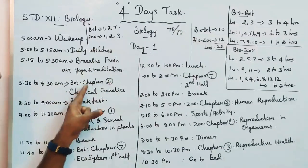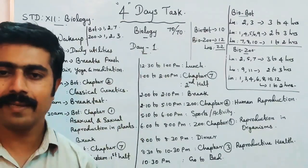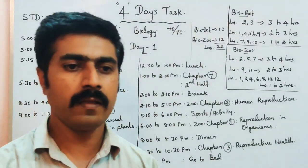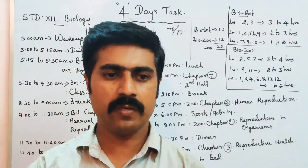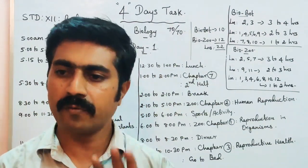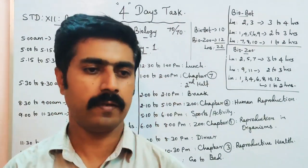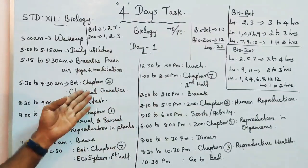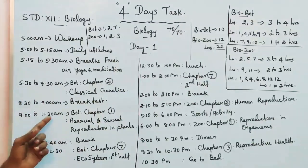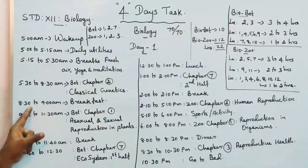At 5:30am, start Chapter 2 — topic: Classical Genetics. Do a full revision session of 3 hours in the normal morning session. After 9 o'clock, continue for about 4 hours total. Separate topics in continuation. Around 8:30 to 9:00am, take breakfast — include fruits for a healthy meal.